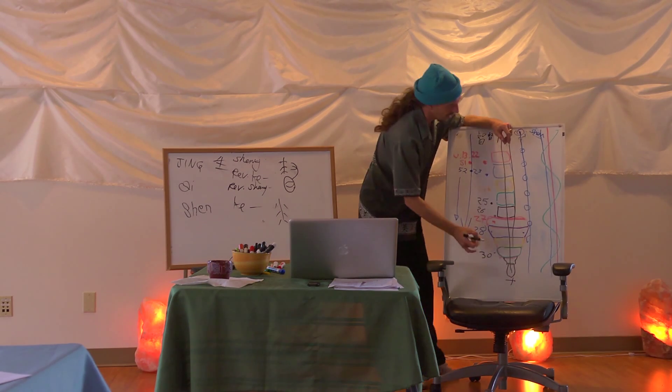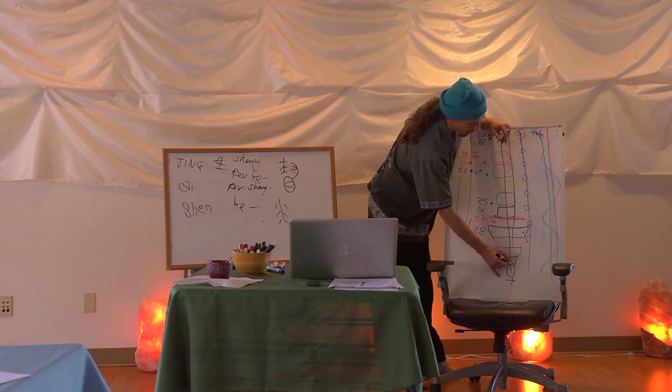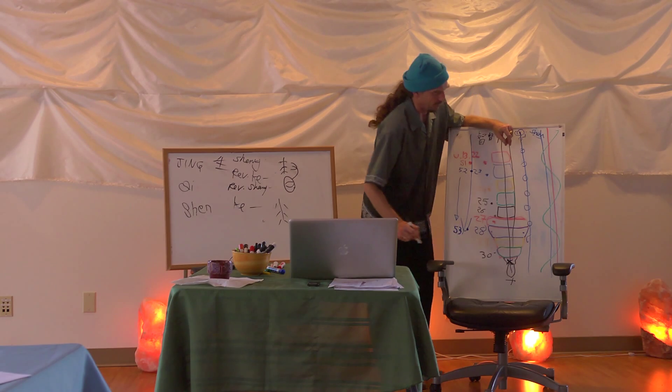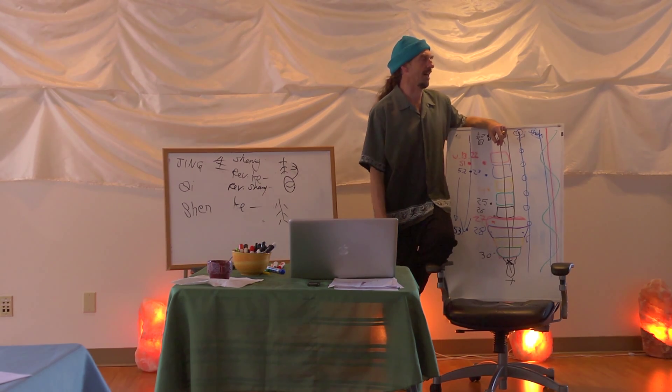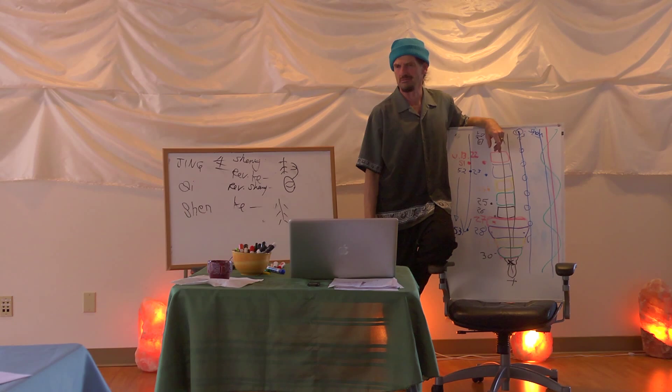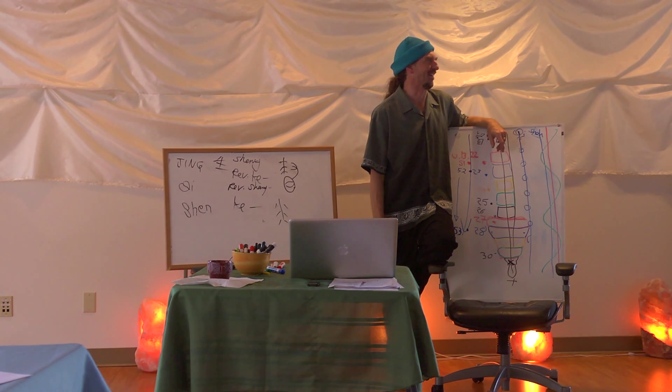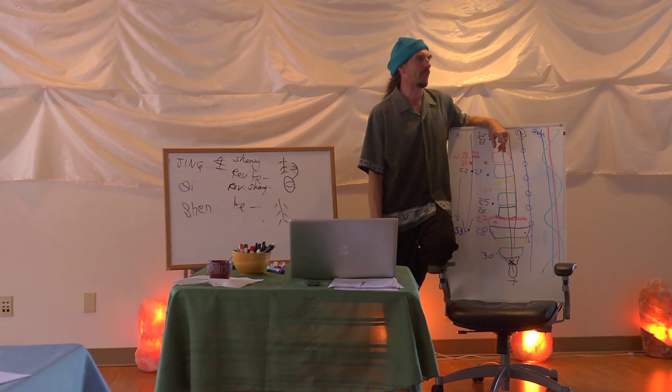And then you have Governor Vessel 2, which is between the sacrum and the tailbone. And it's called Yao Shu. We are Yao Shu. I'm not hallucinating that.